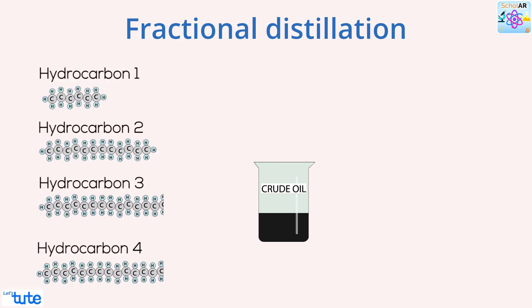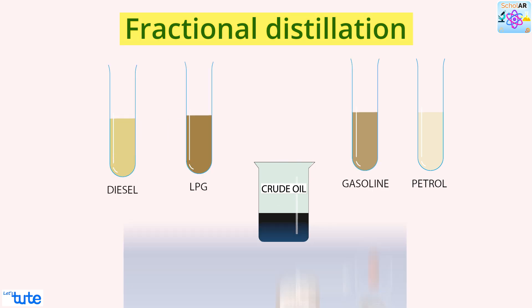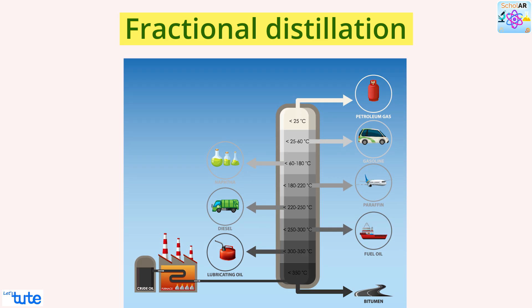Crude oil is a mixture of different hydrocarbon chains and it needs to go through the separation process to get useful products like petrol, diesel, gasoline, LPG, etc. For this, we use fractional distillation. Fractional distillation completes several simple distillations in one apparatus.